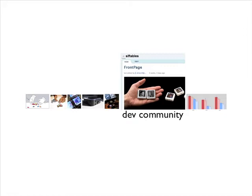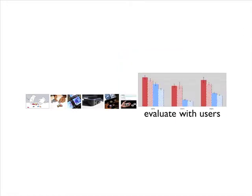We started getting development kits out to a community of other developers — some internal, like my office mate who wanted to make applications for kids, and some external R&D labs from companies that saw potential. We built a wiki to gather feedback, and then I evaluated a few applications with users to better understand the advantages and limitations of a platform like this for interaction.